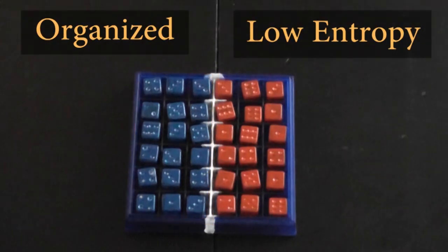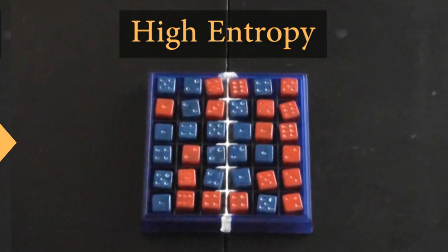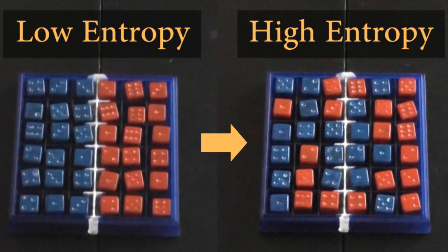This is low entropy. If I shake up the cubes, the colors get mixed. This is high entropy. Entropy naturally goes up. Why does this happen?